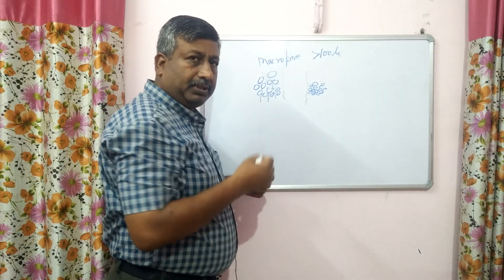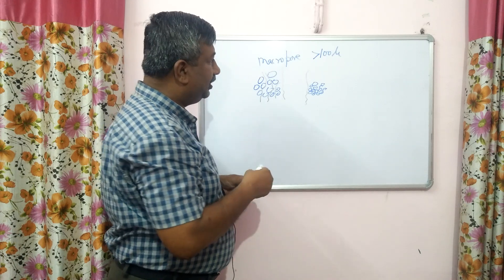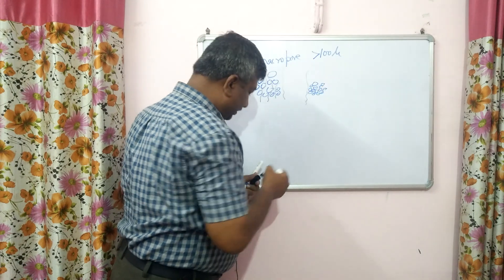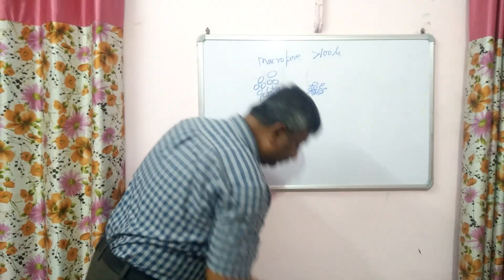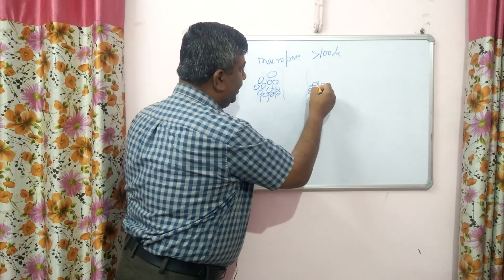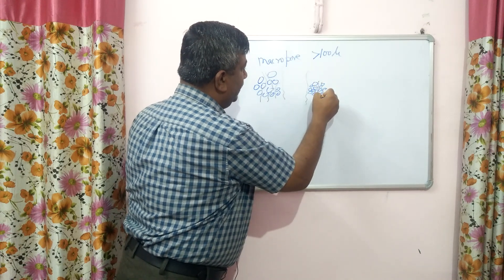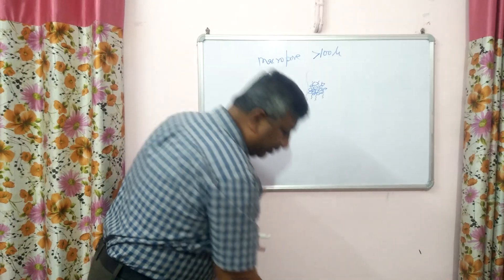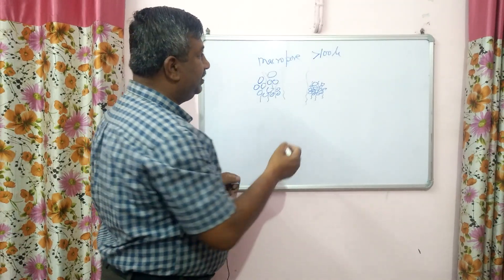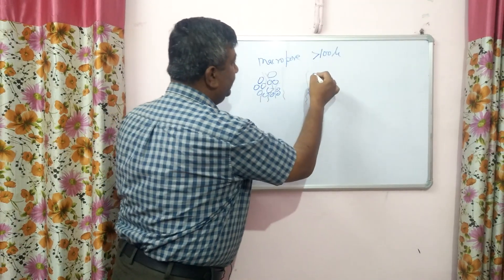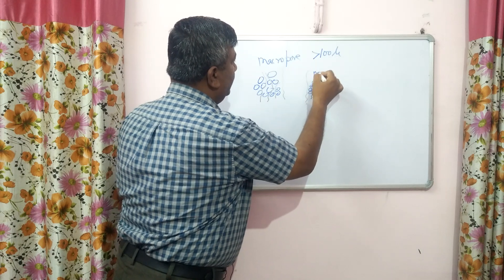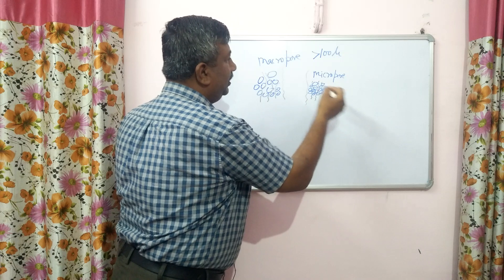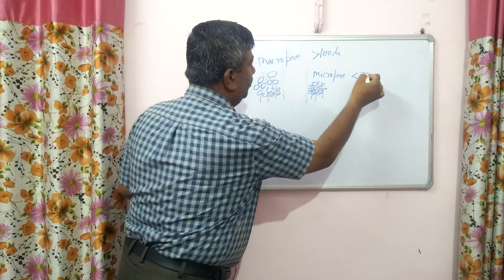If the aggregates are small, then the space between them is less. The inter-space between the aggregates is very small, and this is known as a micropore. The size of a micropore is less than about 30 microns.